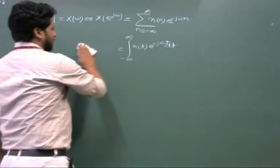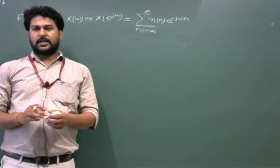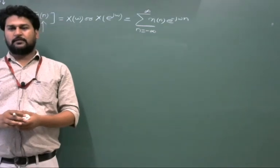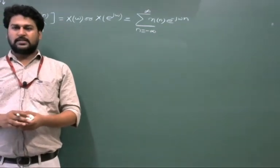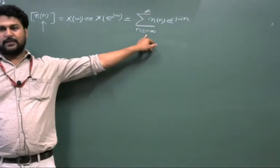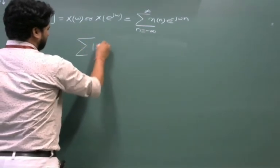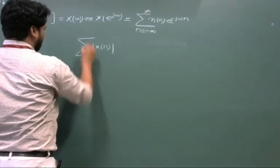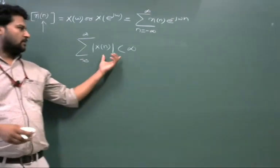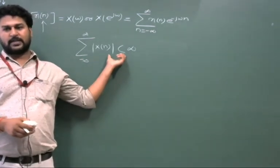For the convergence — or existence — of the Discrete Time Fourier Transform, there are Dirichlet conditions. These state that we can find the DTFT of signal x[n] if x[n] is absolutely summable in the range from minus infinity to plus infinity. This is the sufficient condition to find the DTFT of the given signal x[n].